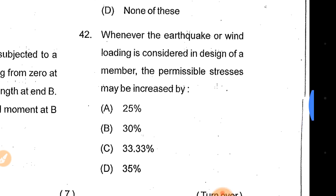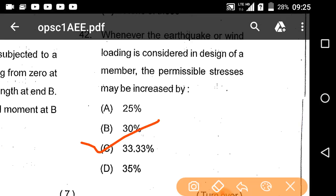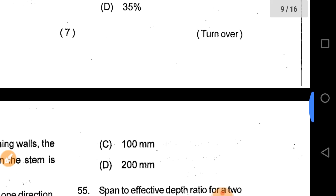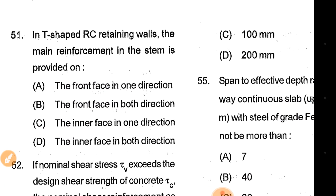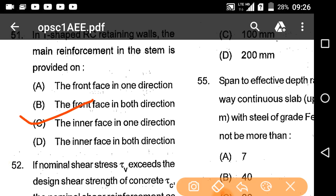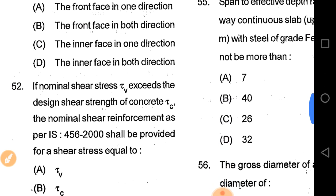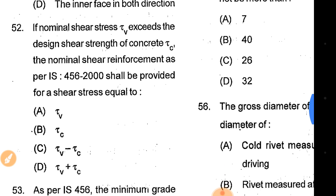Main reinforcement in the slab is provided in one direction only. If the nominal shear stress TAO is less than the design shear strength of concrete TAO C, it means nominal shear reinforcement is to be provided.